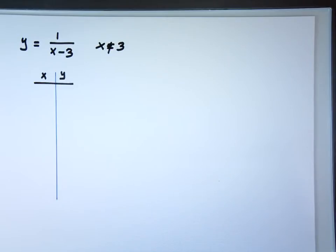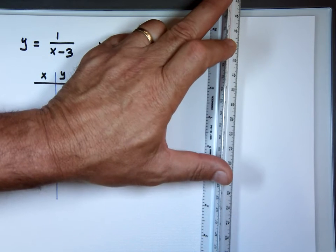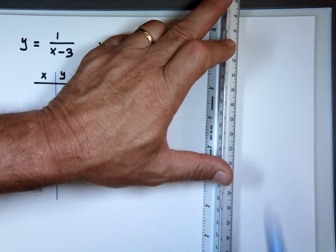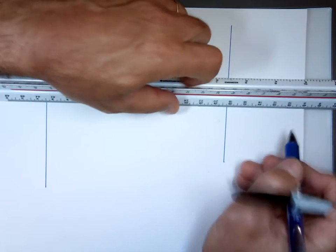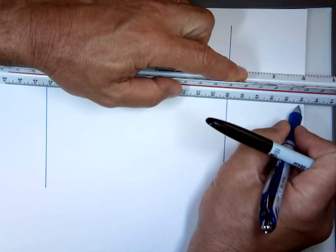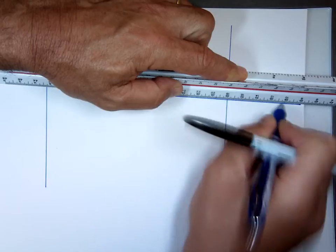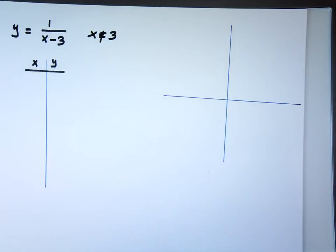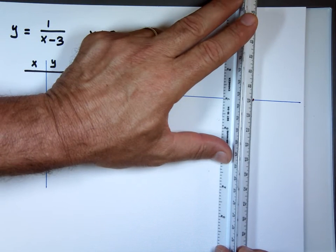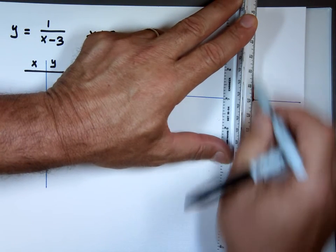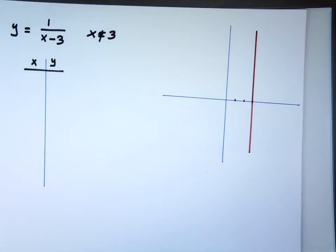At x equals 3, the function does not have a value. I'll put a red line there — red means stop, don't go there. I'm drawing a red vertical line at x equals 3. Don't cross this line, don't touch it.